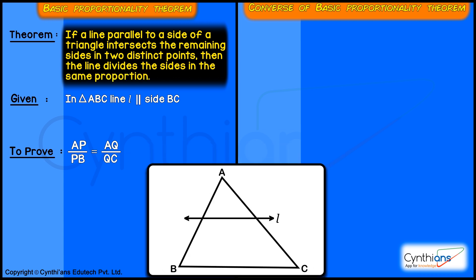That means we will be given a line which is parallel to one side and intersecting two sides of a triangle, thus making two points P and Q. We need to prove that the ratios are equal: AP upon PB equals AQ upon QC.